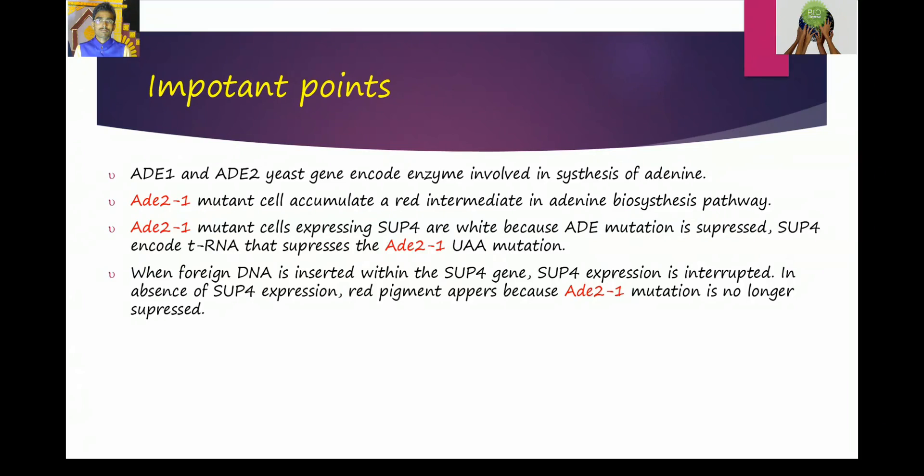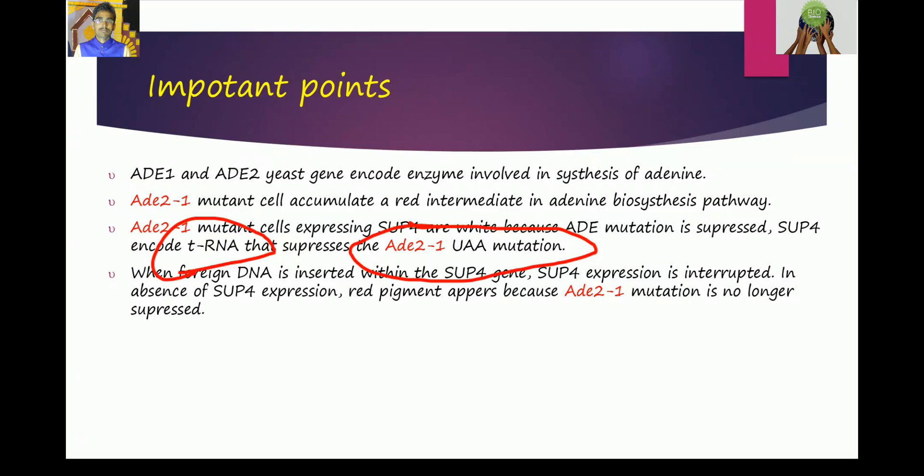So, SUP4 present in mutated cell suppresses its mutation. Because it encodes a tRNA that suppresses ADE1 mutation, UAA mutation. We know that UAA is a stop codon.